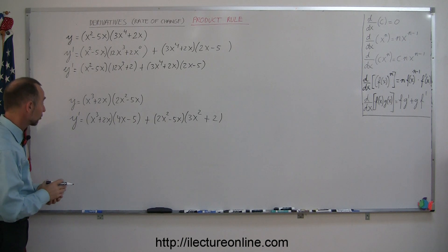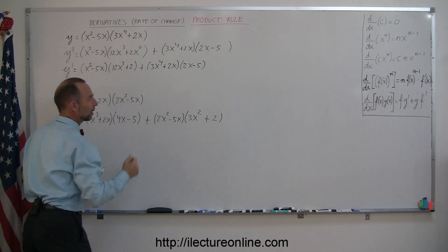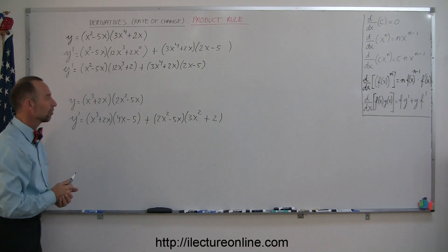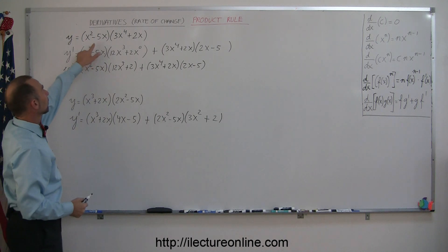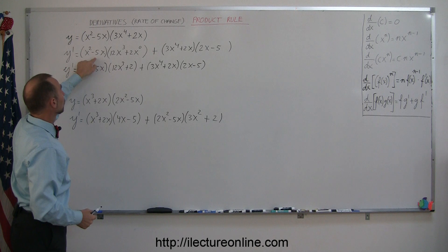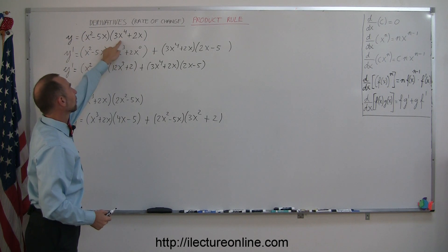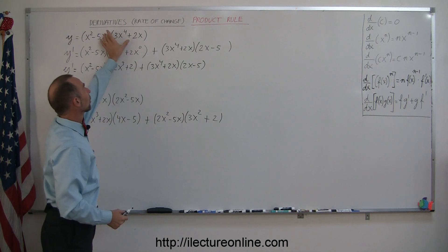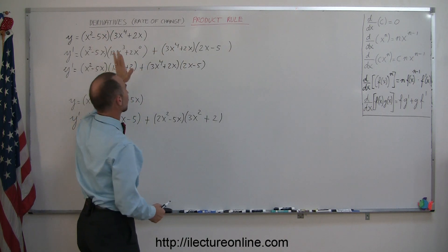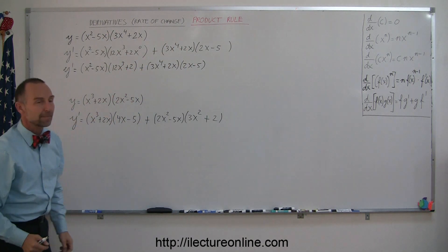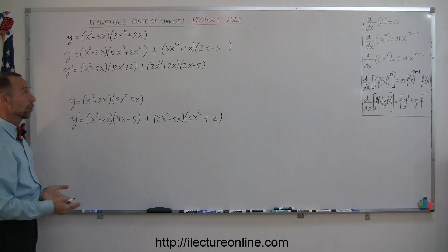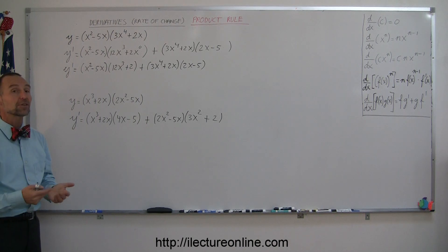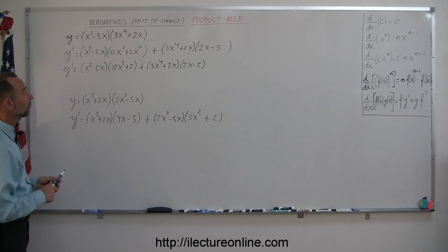Again, it looks like we could factor an x here and there and simplify a little bit, but we'll just leave it as such to keep it cleaner and easier to see. To recap: if you want to take the derivative of a product, you take the first and simply copy the function, multiply that times the derivative of the second, plus you copy down the second function times the derivative of the first — and that's how you do it. Next we're going to show you the quotient rule, so look at the next video to see how we take derivatives of quotients.